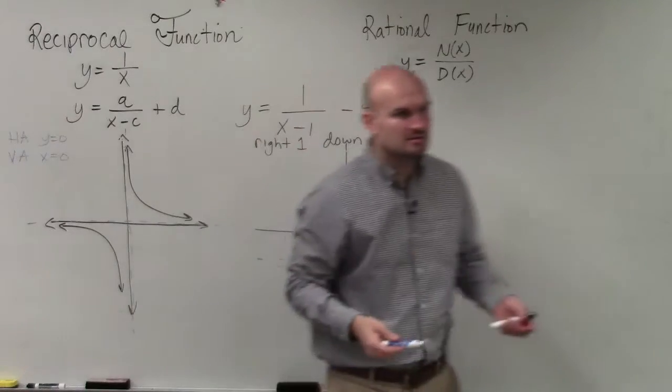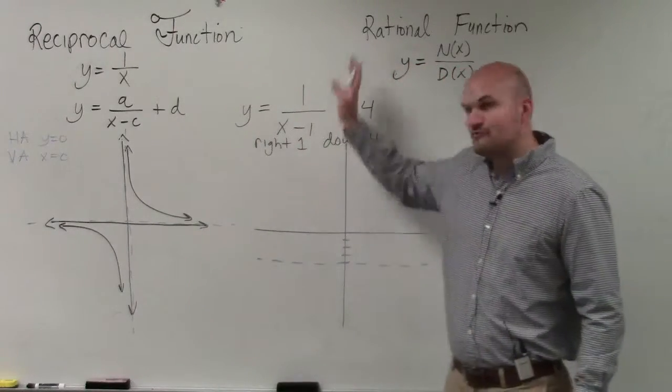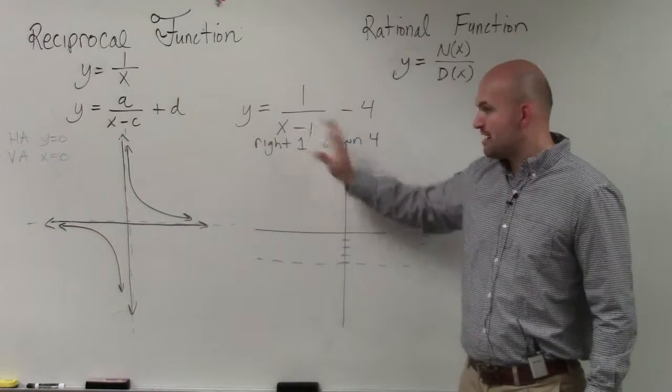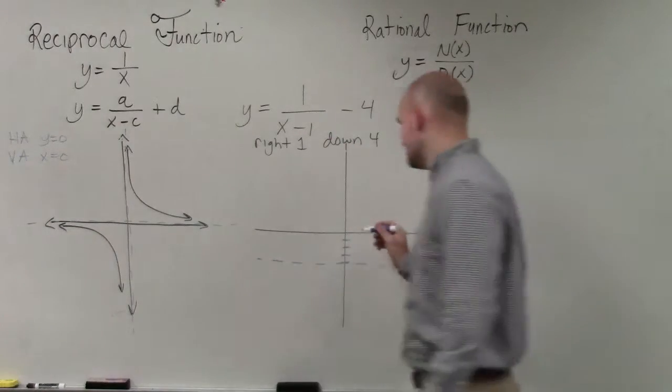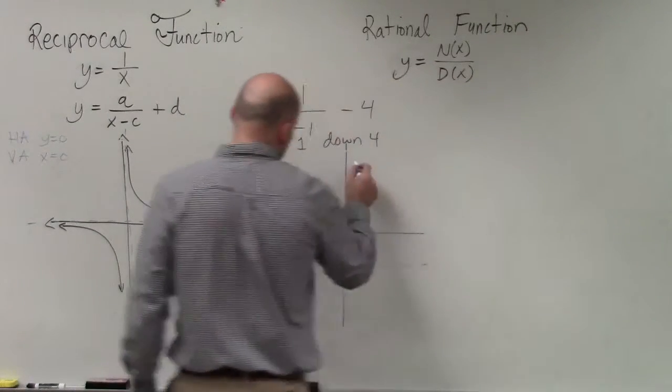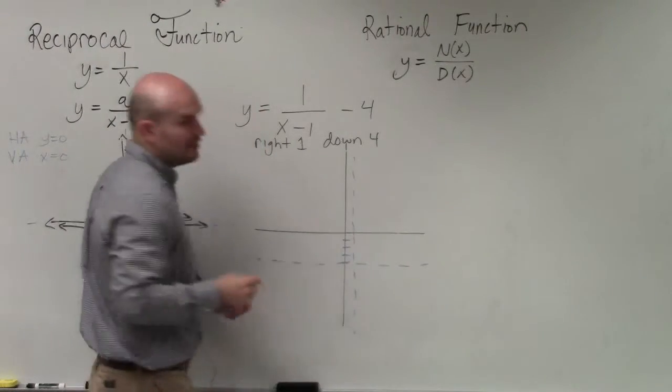You guys see that? And then if my vertical asymptote is at x equals 0, but the graph is being shifted 1 to the right, I now have a new asymptote over here.